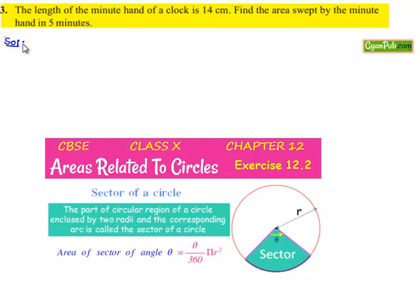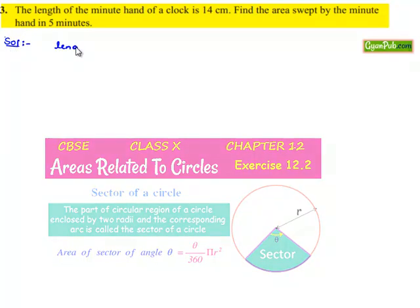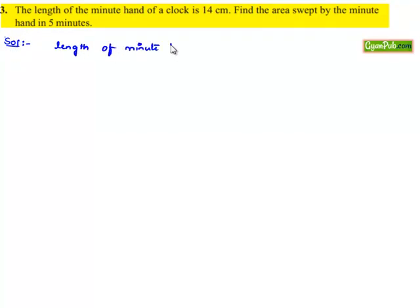Now moving on to the solution. Here the length of the minute hand is given as 14 cm. Let it be as some r. Now we need to find the area swept by the minute hand in 5 minutes.